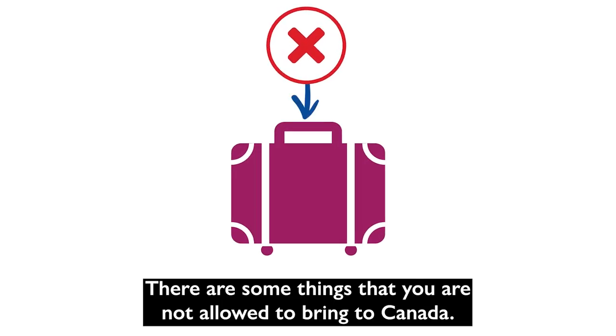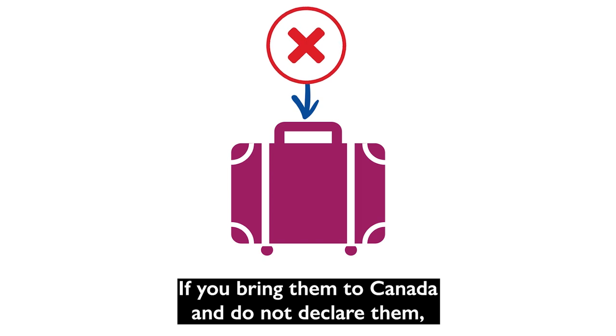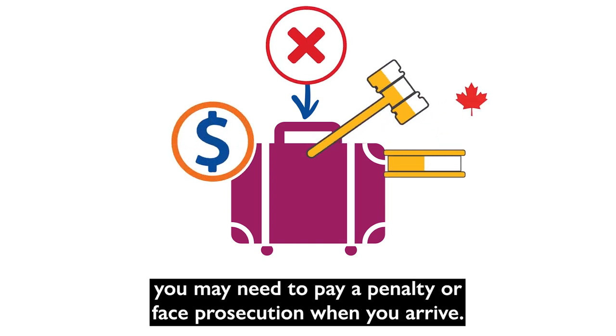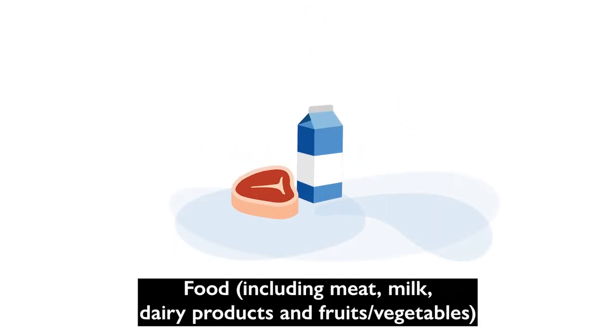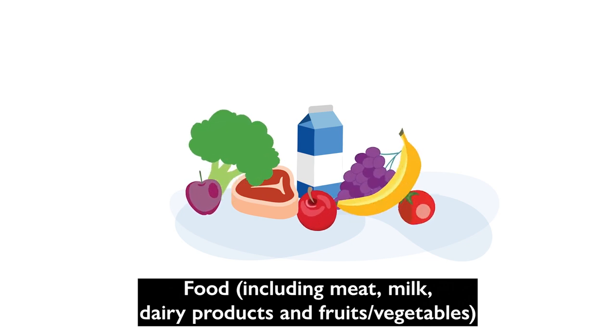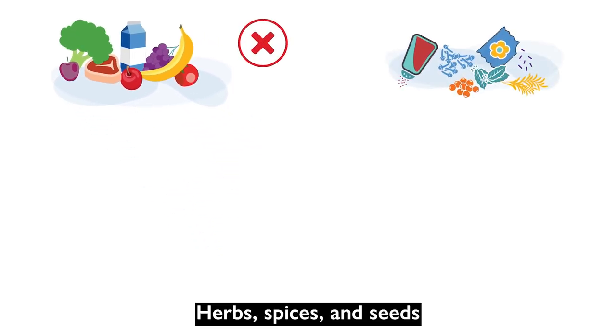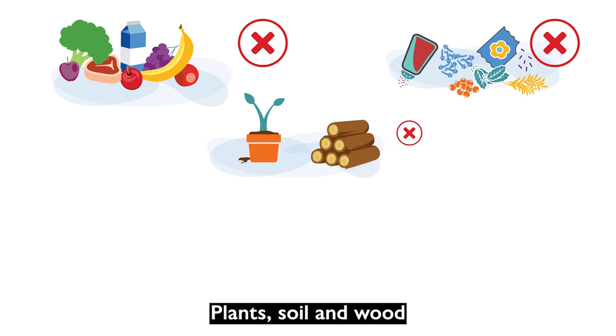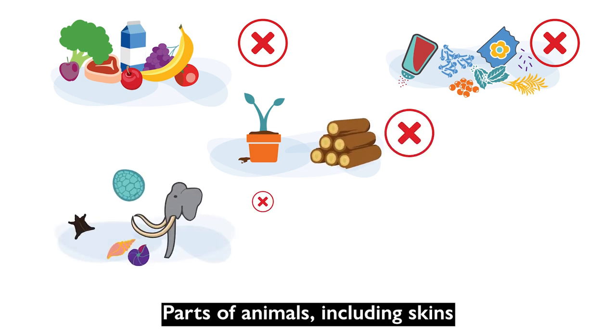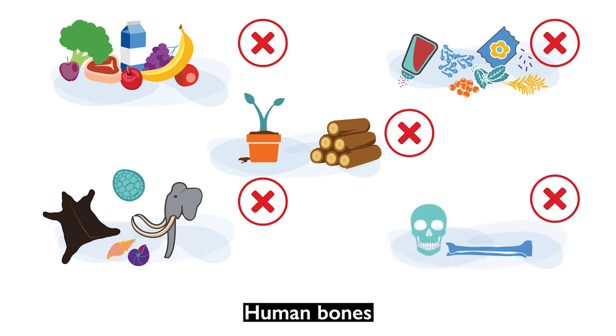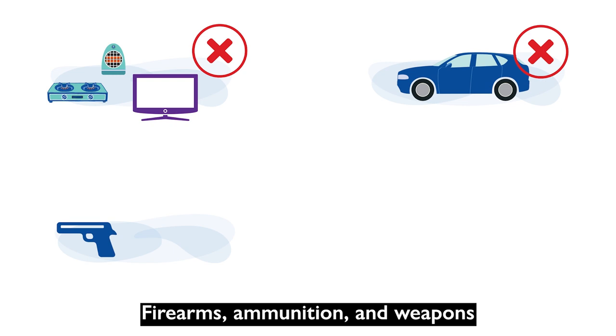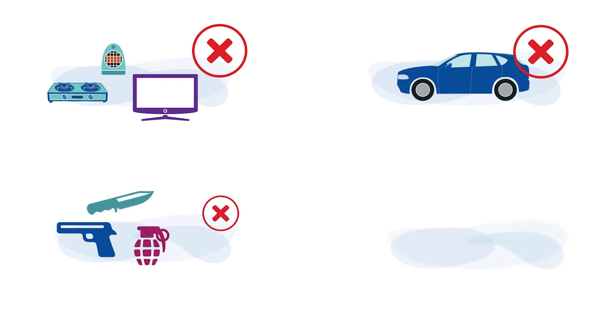Things to leave behind. There are some things you are not allowed to bring to Canada. If you bring them and do not declare them, you may need to pay a penalty or face prosecution when you arrive. These include: food, including meat, milk, dairy products, and fruits or vegetables; herbs, spices, and seeds; plants, soil, and wood; parts of animals, including skins; human bones; large electronic devices, including televisions and home appliances; vehicles; firearms, ammunition, and weapons; and drugs.